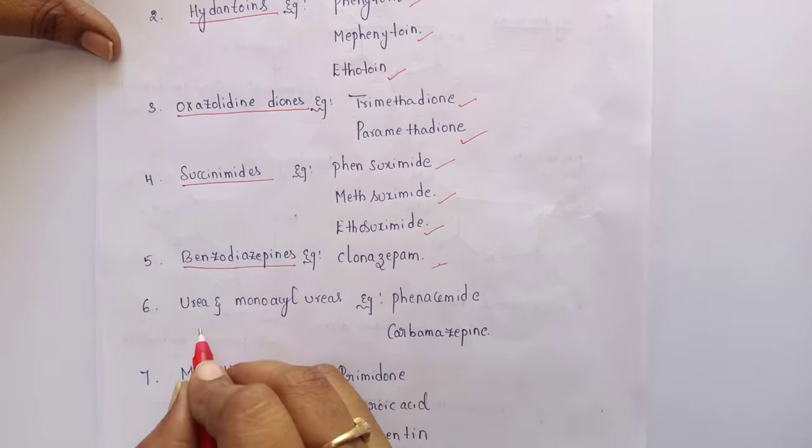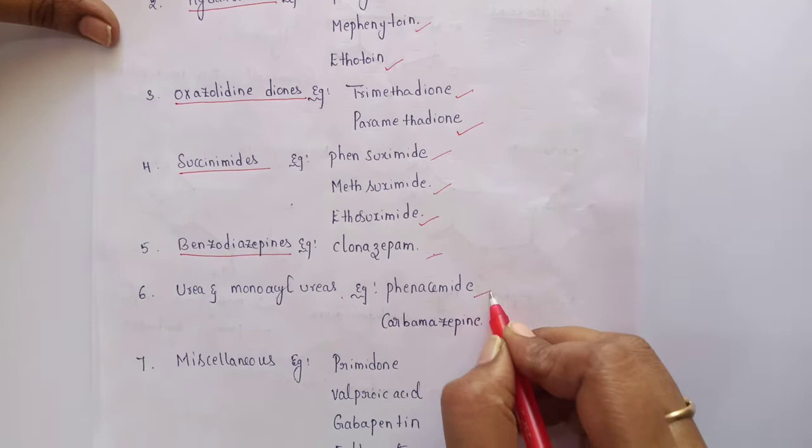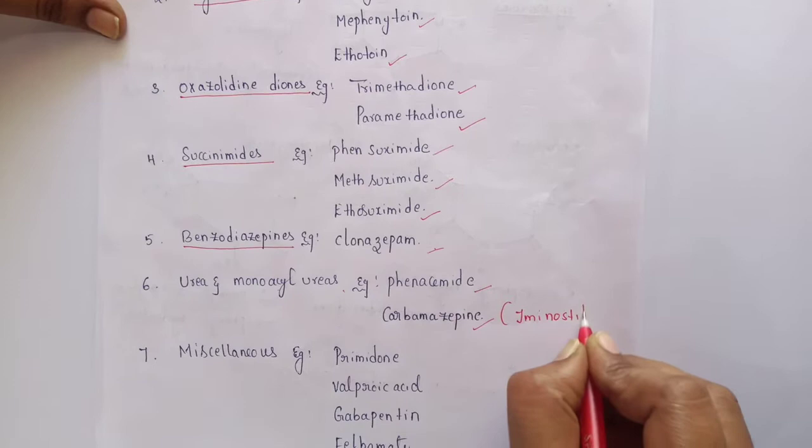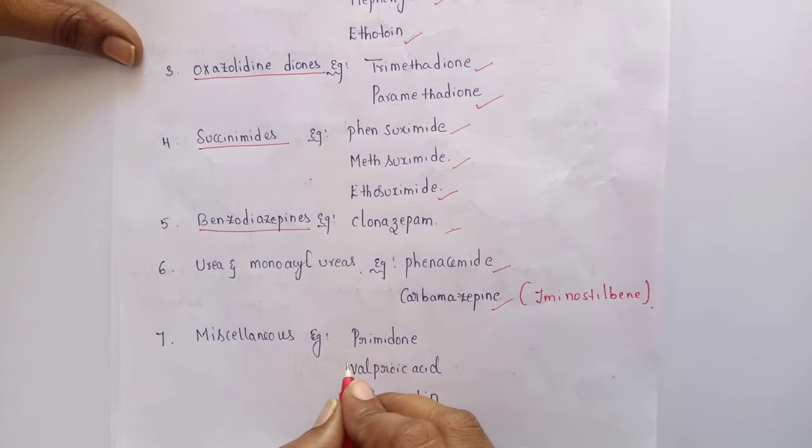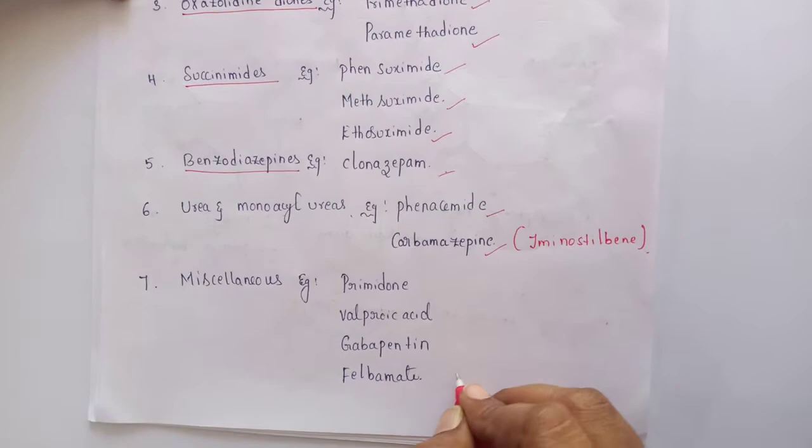The 6th class is urea and monoacylurea derivatives. Two examples are phenacemide and carbamazepine, which comes under the category of iminostilbene ring. The 7th and final class is miscellaneous compounds. The examples are primidone, valproic acid, gabapentin, and felbamate.